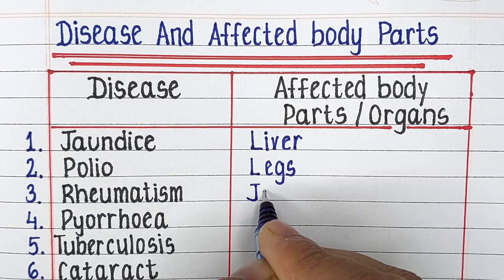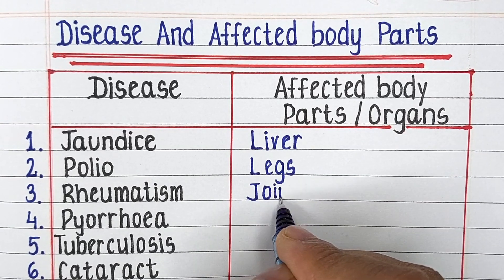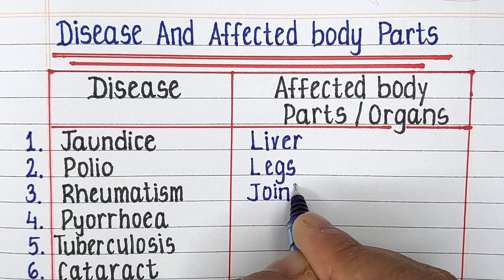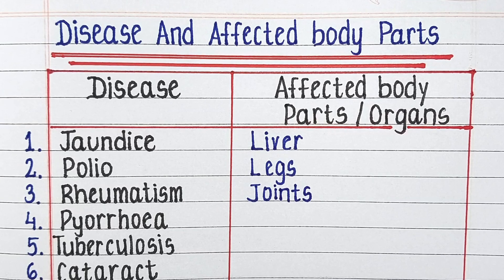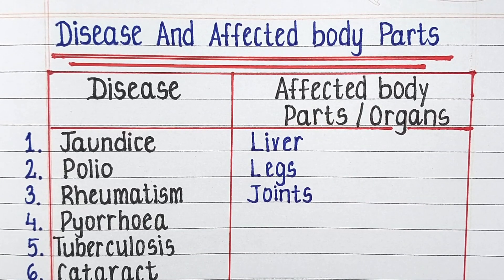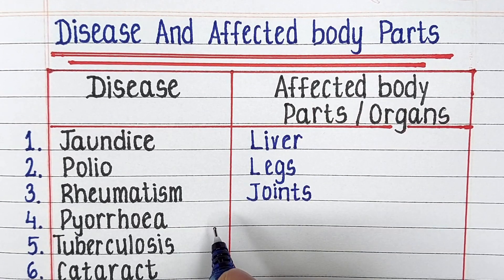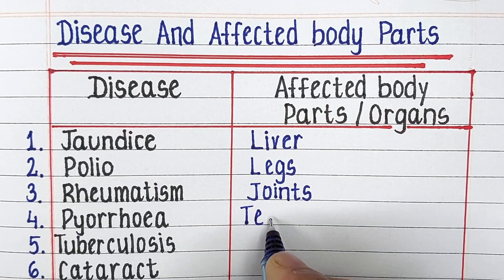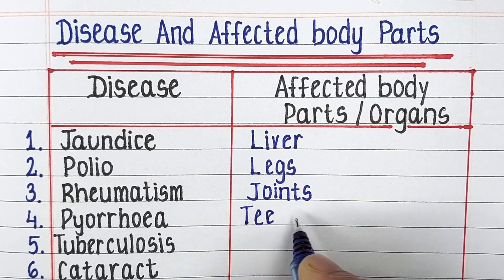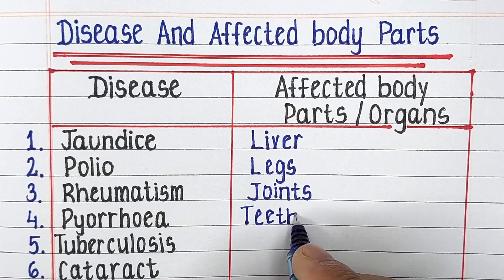First one is jaundice. Jaundice affects the liver of the human body. Next is polio. Polio affects the musculoskeletal system, especially the legs of the human body.